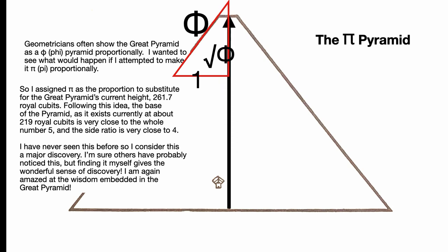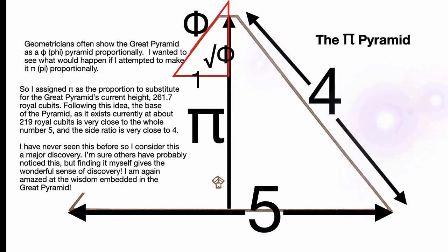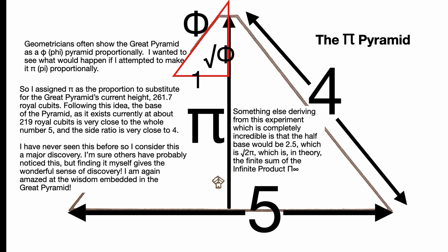So following this idea, the base of the pyramid as it exists currently at about 419 royal cubits is very close to the whole number 5, and the side is very close to 4. Incredible. So I found this beautiful pyramid I was looking for. If we call the height Pi, and then we got the base of 5 and the side of 4. It's almost like the beautiful 3-4-5 triangle of Pythagoras, but it's not. It's a Pi pyramid. So I've never seen this before, so I consider this a major discovery, but I'm sure others have probably noticed this. But finding it for myself makes it feel like a wonderful discovery. So I'm amazed, as always, at the wisdom embedded in the Great Pyramid.